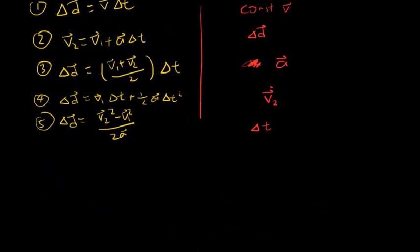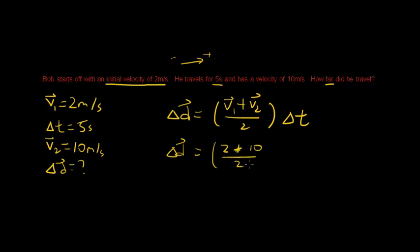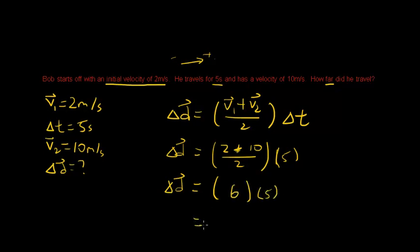Let's state equation three and plug in the values. Displacement equals (v1 plus v2) over 2 times time. v1 is 2, v2 is 10, time is 5 seconds. So: (2 plus 10) over 2 times 5. That's 12 divided by 2 equals 6, times 5 equals 30 meters. Total displacement is 30 meters.